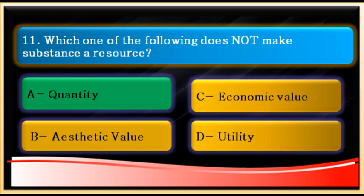Question number eleven: which of the following does not make a substance a resource? Two things are very important: value and utility make anything a resource. There can be different kinds of value — economic value, aesthetic value, religious value — and utility, meaning it satisfies our need. Aesthetic value, like a painting, and economic value, like paper currency, make something a resource.